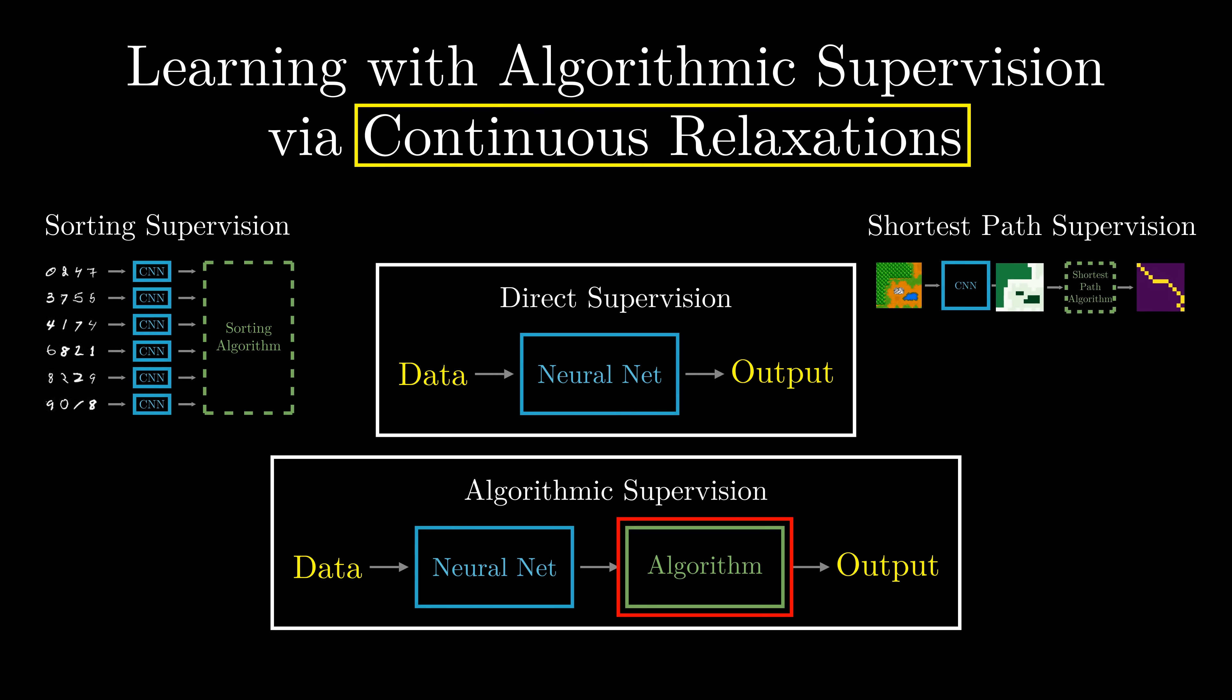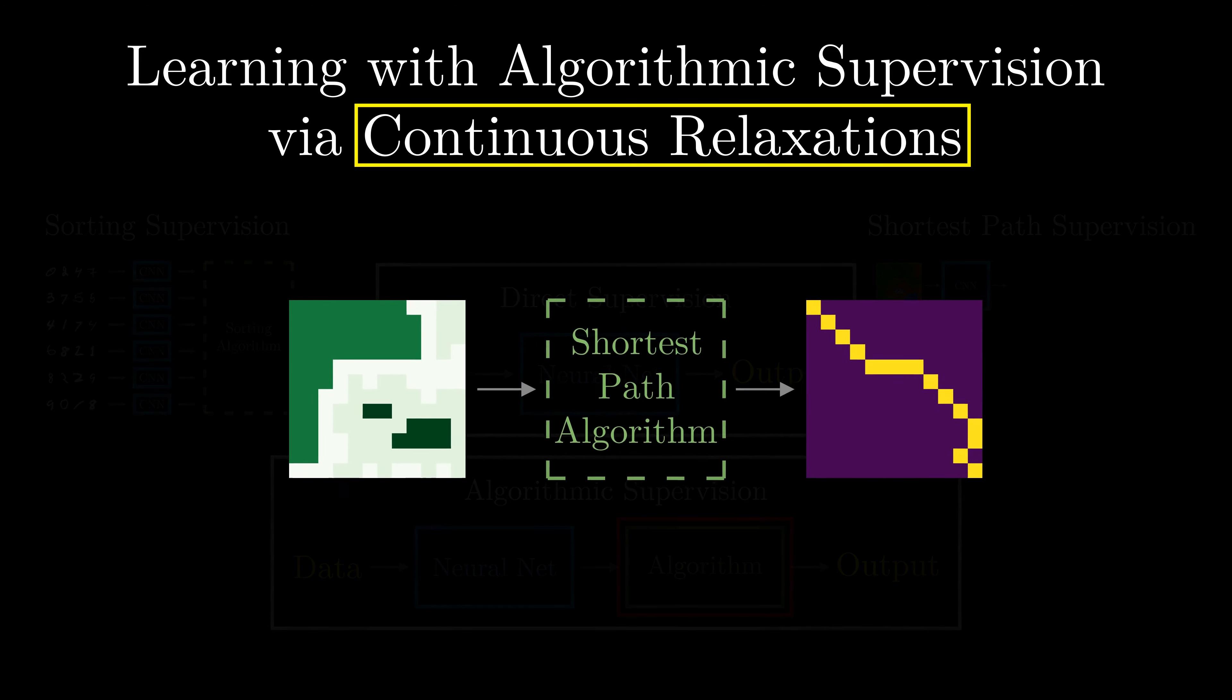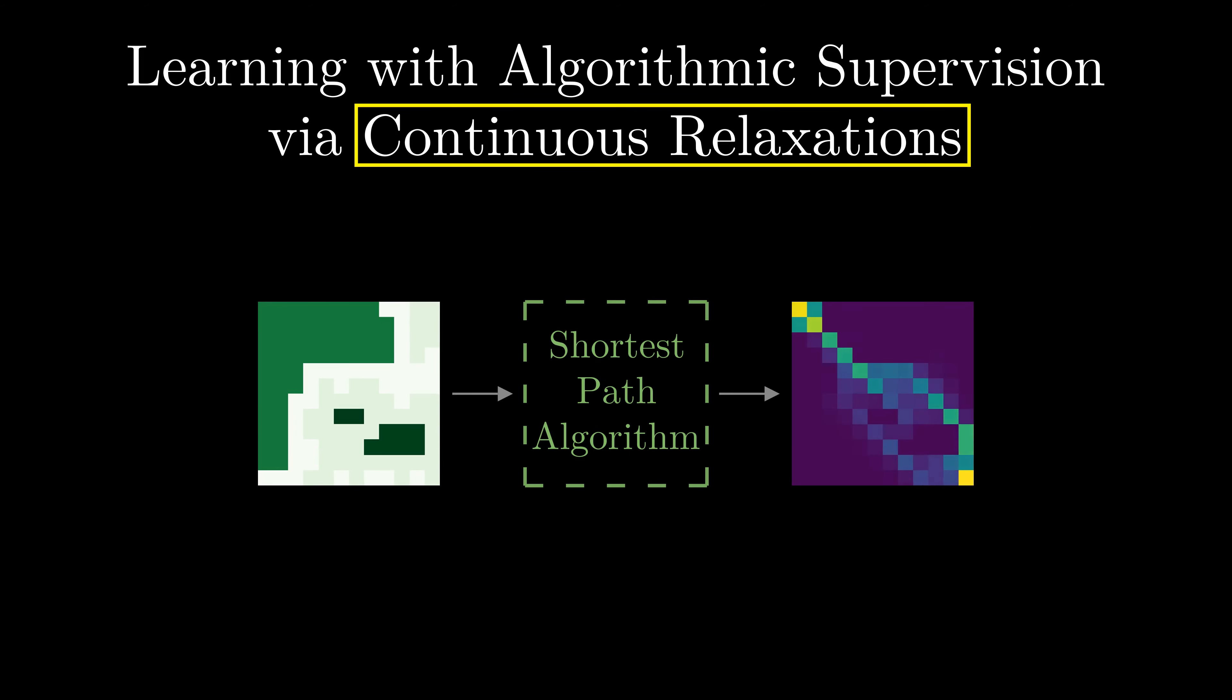For example, for the shortest path algorithm, here you can see how the algorithm is relaxed with different degrees of relaxations. Using a relaxed algorithm allows gradient-based training of the neural networks.